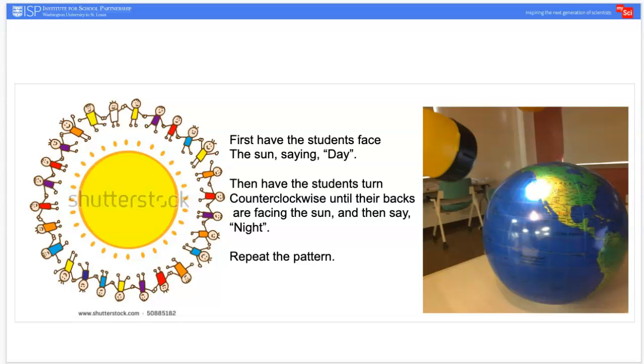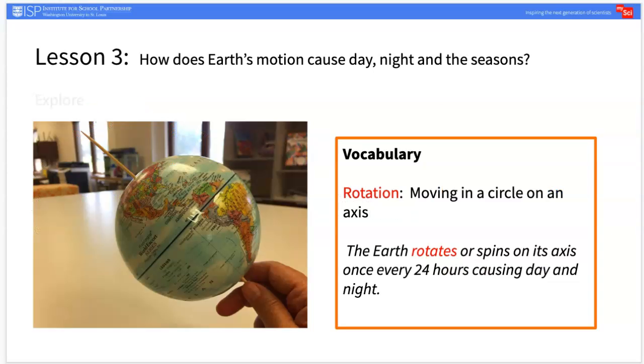Students should recognize they are experiencing day. Next, have students rotate counterclockwise so the observer in their city is facing away from the Sun. Students should recognize the observer would experience night in this position. Allow students to repeat this pattern a number of times.